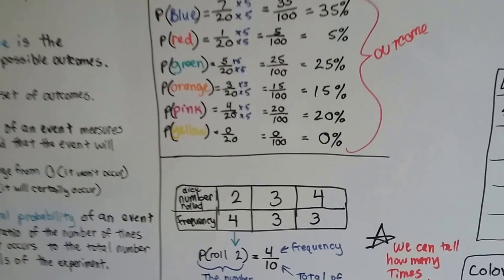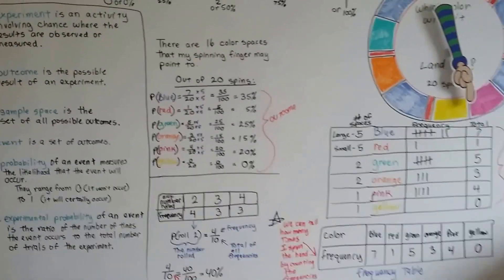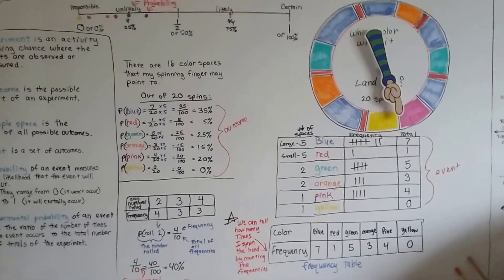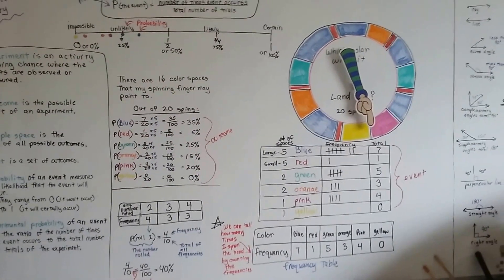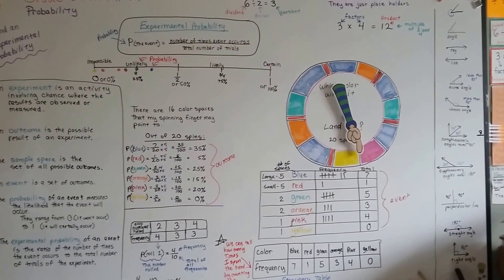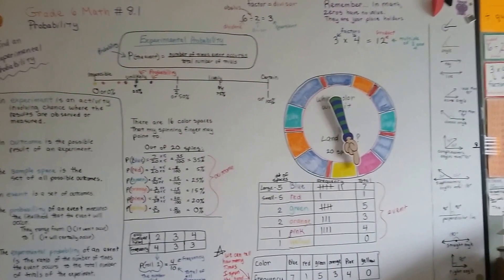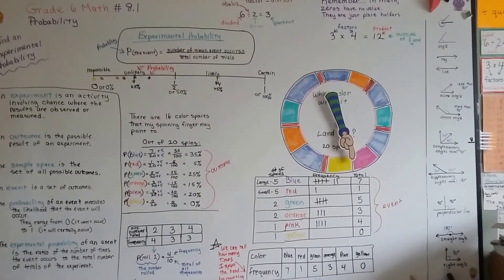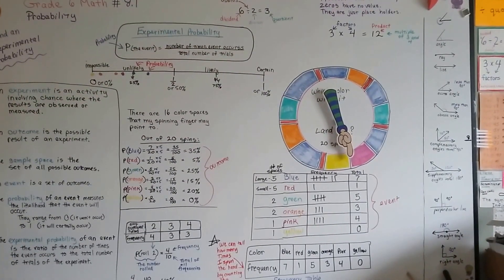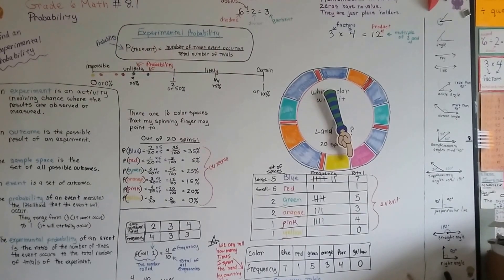So, now you know what an experimental probability is. You know how to find probability. You also know that when I spin my hand around twenty times, it lands on the pink a lot more than we thought it would. And, now you should be able to figure out some probabilities on your own. I'll see you next video. Keep up the good work. Keep trying. We're getting through sixth grade math. We're on chapter eight now. See you next video. Bye.